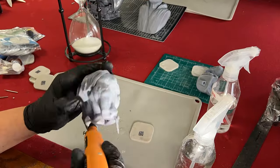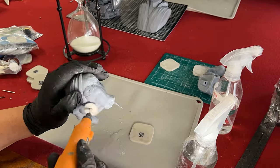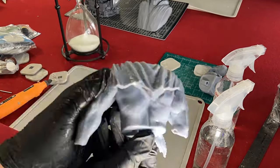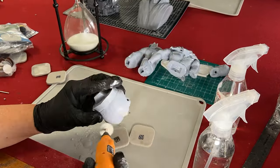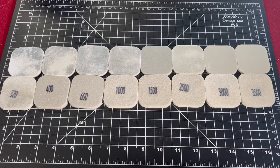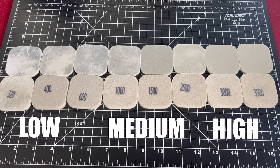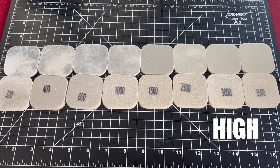This might all sound self-explanatory, but I didn't know any of this when I started, and I spent a lot of time worrying about the different grits and damaging the model. The entire sanding process all boils down to working through low, medium, and high, and finishing on something at least over 2,000.